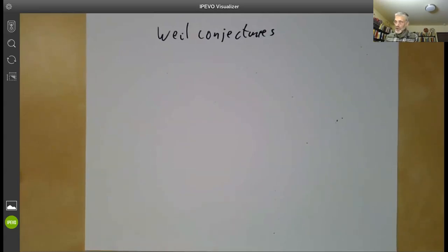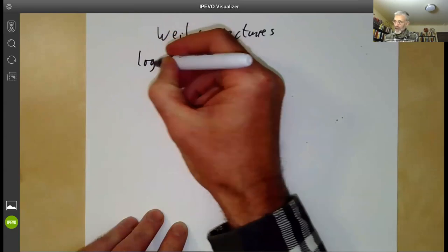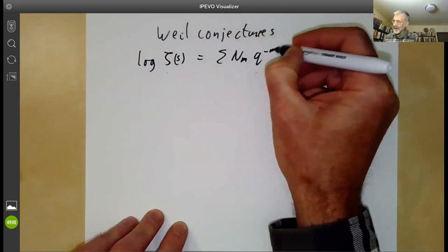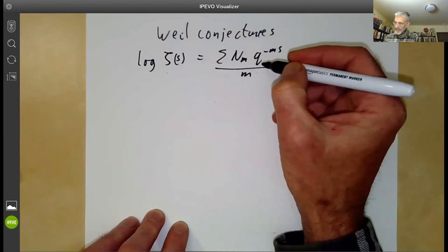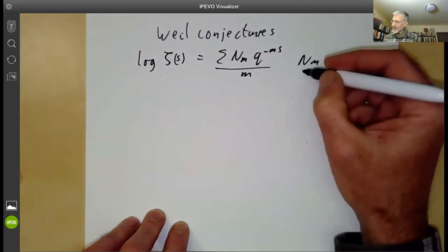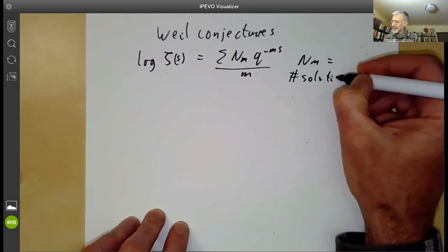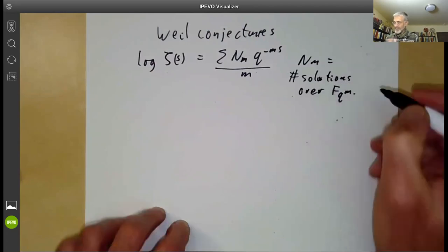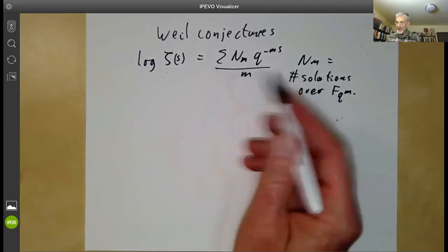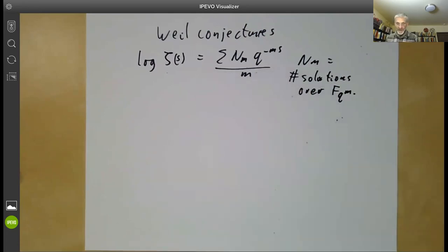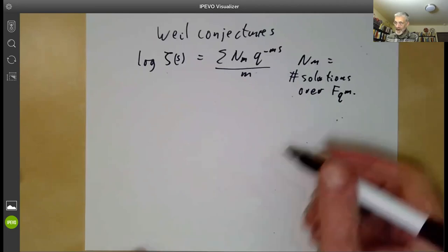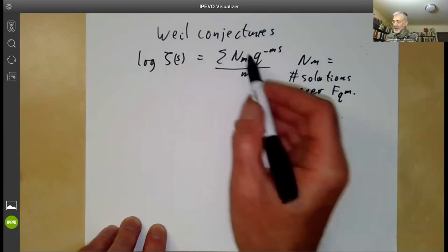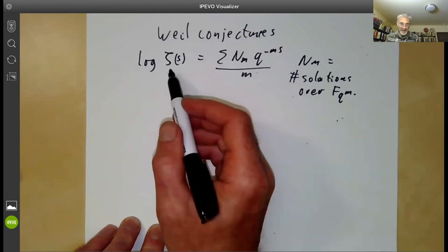First of all, we recall that the zeta function of a curve can be defined as the sum of N_m q^{-ms} / m, where N_m is the number of points on the curve over the finite field of order q^m. So the zeta function encodes the number of solutions to some equation over various finite fields. Weil noted that this definition makes perfect sense not just for curves but for higher-dimensional varieties.